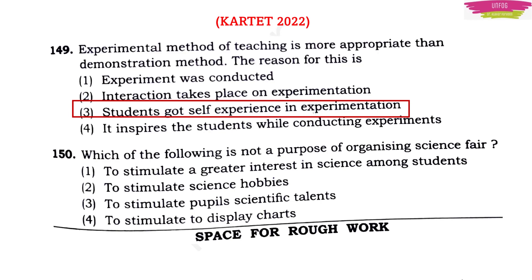Next question: which of the following is NOT a purpose of organizing a science fair? Options are: to stimulate greater interest in science among students; to stimulate science hobbies; to stimulate and display people's scientific talents; to stimulate and display charts. The answer is option four — to display charts — because the other three are valid purposes of organizing science fairs.